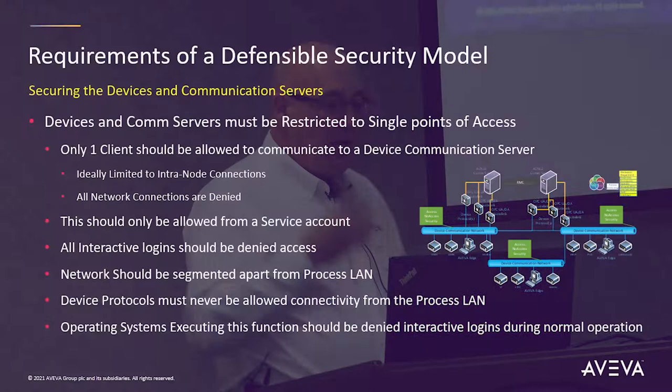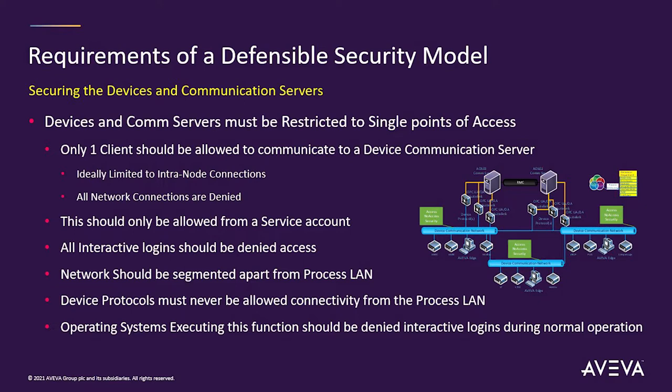As we look at this environment, my blue network is my device network. You should really design this so there's one entity that talks to that device network — a service account. I shouldn't allow interactive logins to communicate to that device network. It should be a service account at the point of who's allowed to talk to that IO server. That network should be segmented from the process LAN. Any operating system that's allowed to operate a COM driver like that should be denied interactive login — there's no reason to be logging into that thing.